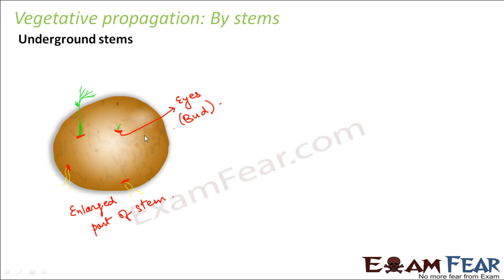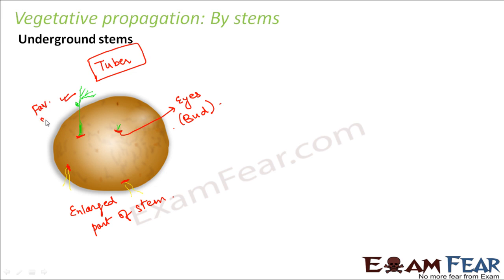Because of this fleshy structure that helps in food storage underground, this type of stem is termed a tuber. So the potato is called a tuber. This is one example where stems are present underground and are capable of giving rise to new plants from those small buds under favorable conditions.